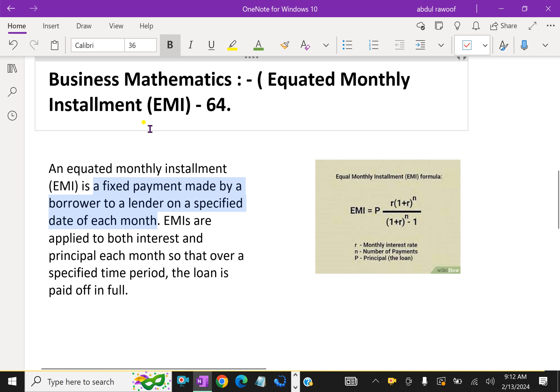Welcome to AminAcademy.com in Business Mathematics that has discussed about EMI, Equated Monthly Installment. An Equated Monthly Installment (EMI) is a fixed payment made by a borrower to a lender on a specified date of each month. EMIs are applied to both interest and principal each month so that over a specified time period the loan is paid off in full.